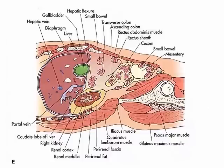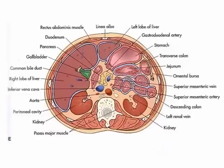Here you can see in green the gallbladder located in the liver inside the oval fossa. Here you can also see the gallbladder in green in a transverse view.